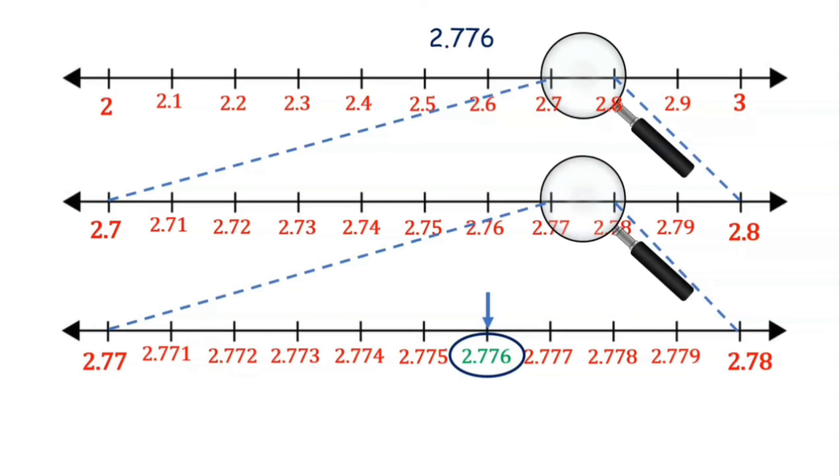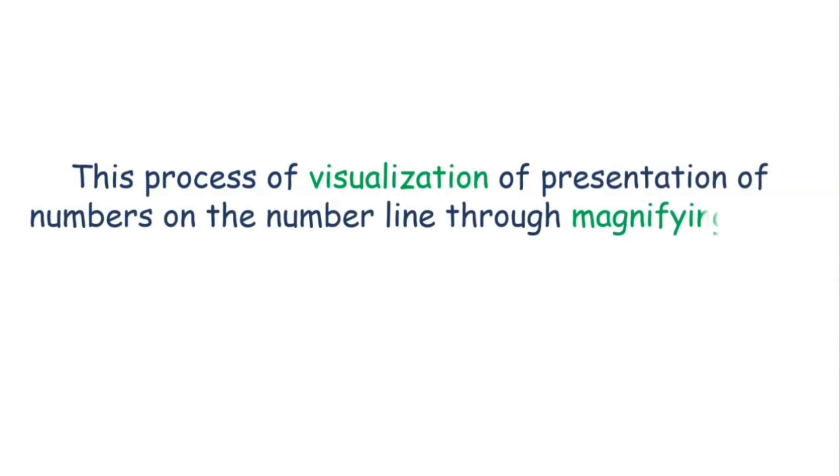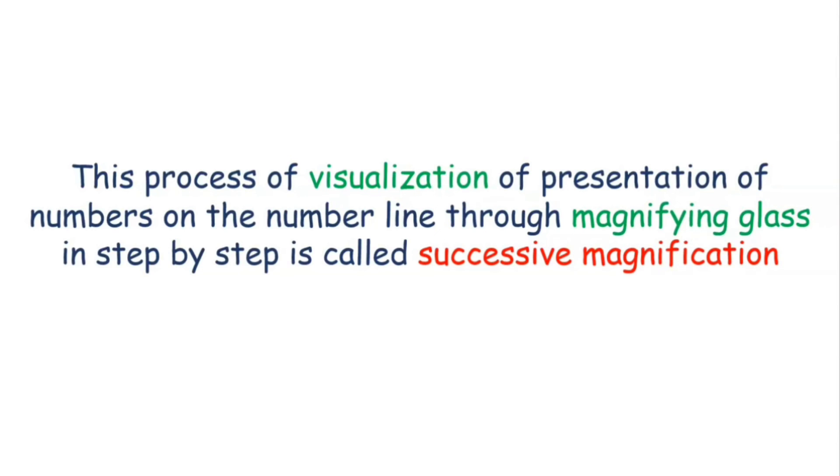We call this process as visualization of presentation of the numbers on the number line through magnifying glass in a step-by-step process. We call it successive magnification. We will meet with another example in the next class. Bye.